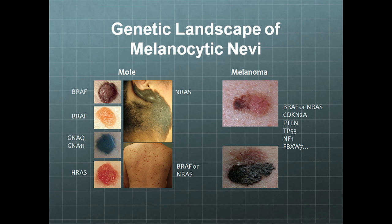The congenital melanocytic nevi have about 89% NRAS mutations. Blue nevi have GNA-Q11 mutations. Spitz nevi tend to have HRAS mutations. Dysplastic nevi — from our studies — most of the time you'll see BRAF, sometimes RAS mutations. What we have learned over many scientific studies is that nevi can transform into melanoma, but you need other genetic events — most likely tumor suppressor loss: P16, P53, PTEN.